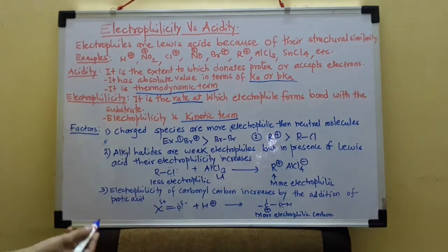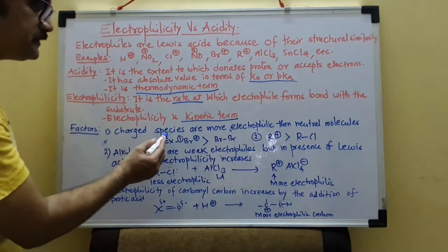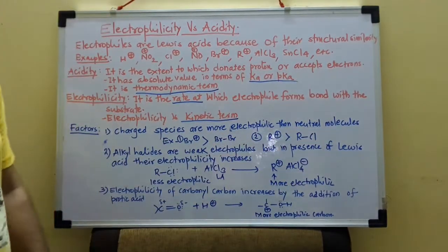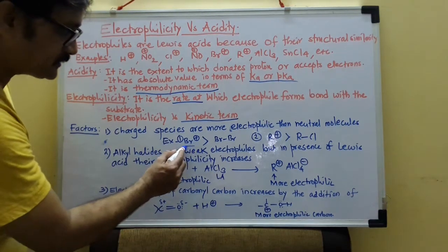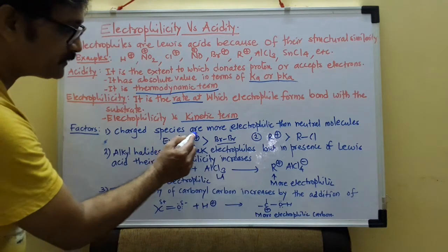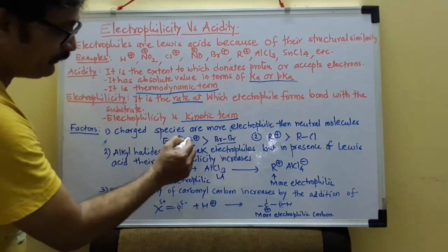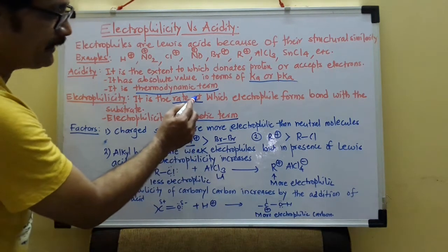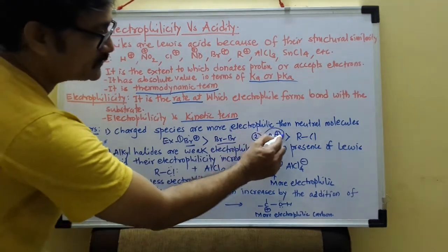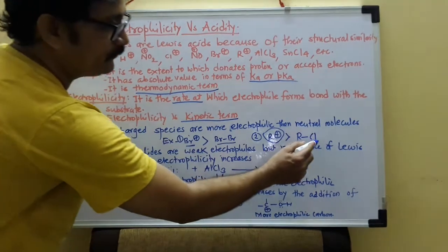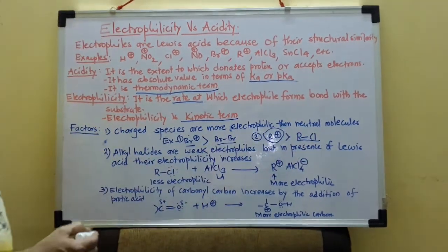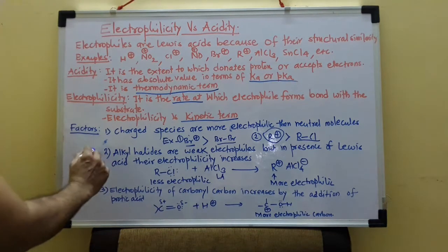Now we have to discuss the factors. So actually charged species are more electrophilic than neutral molecules. So here you can see this cation which is generated from this molecule, which is more electrophilic than this RCl because it is generated from this RCl.